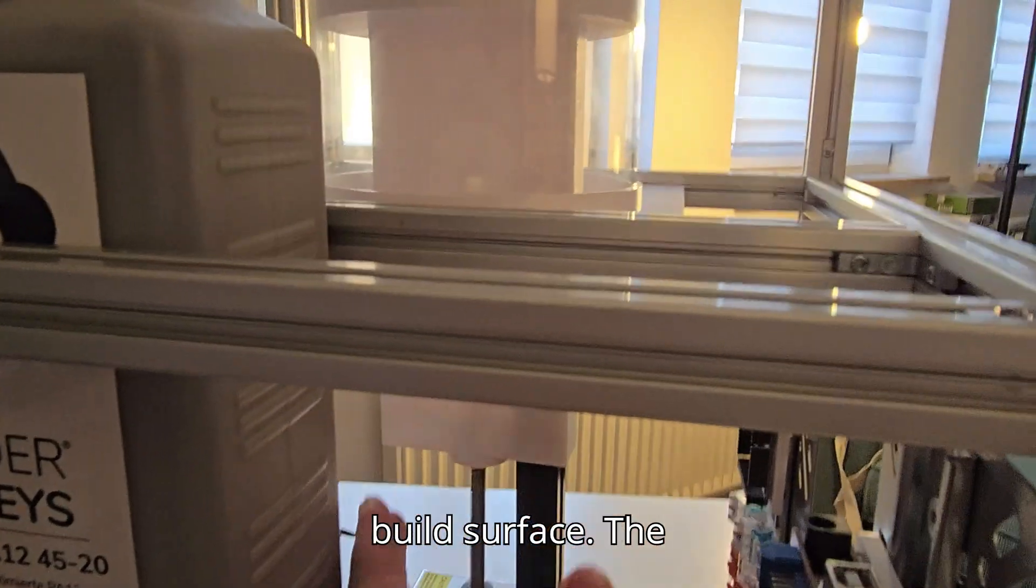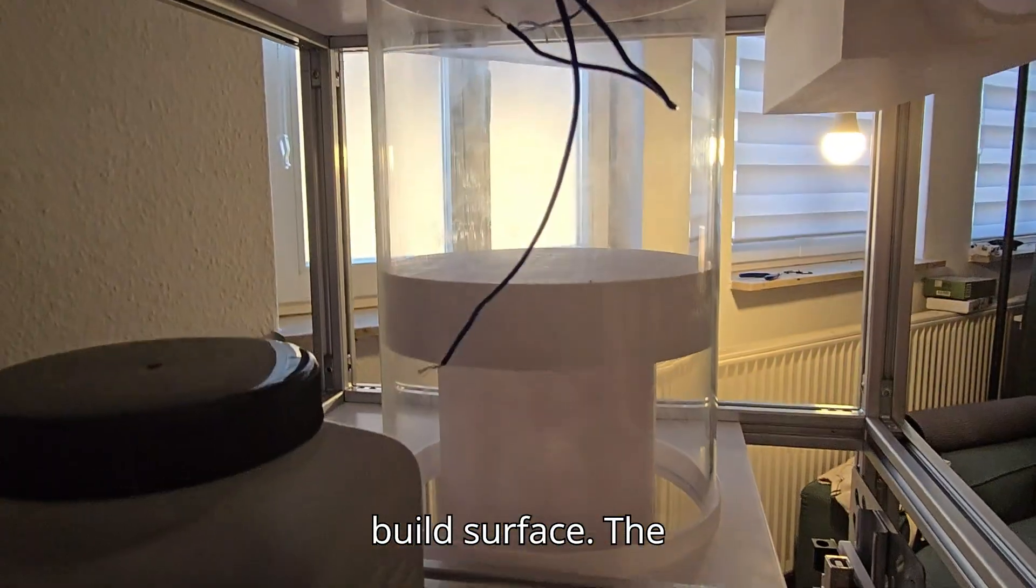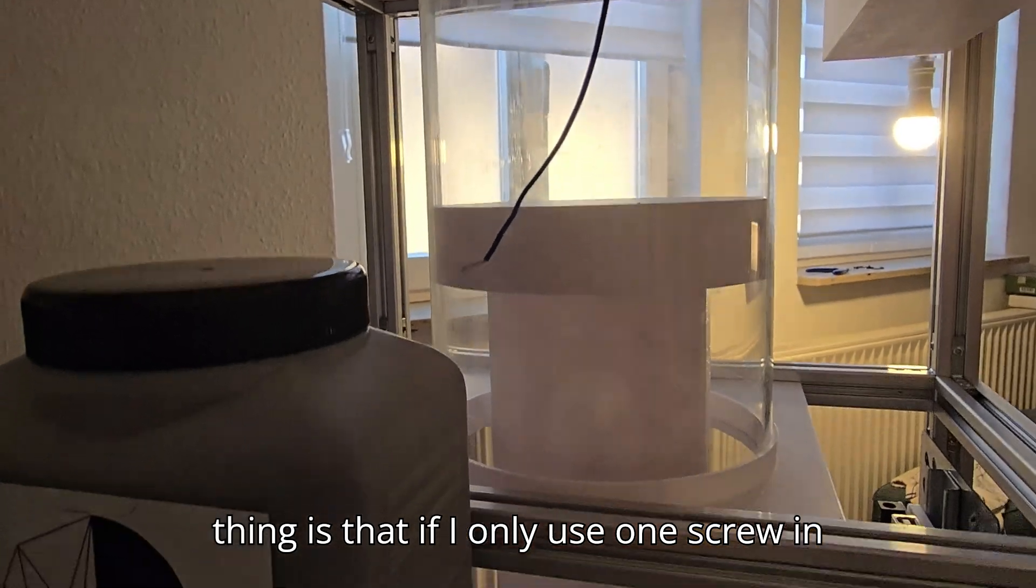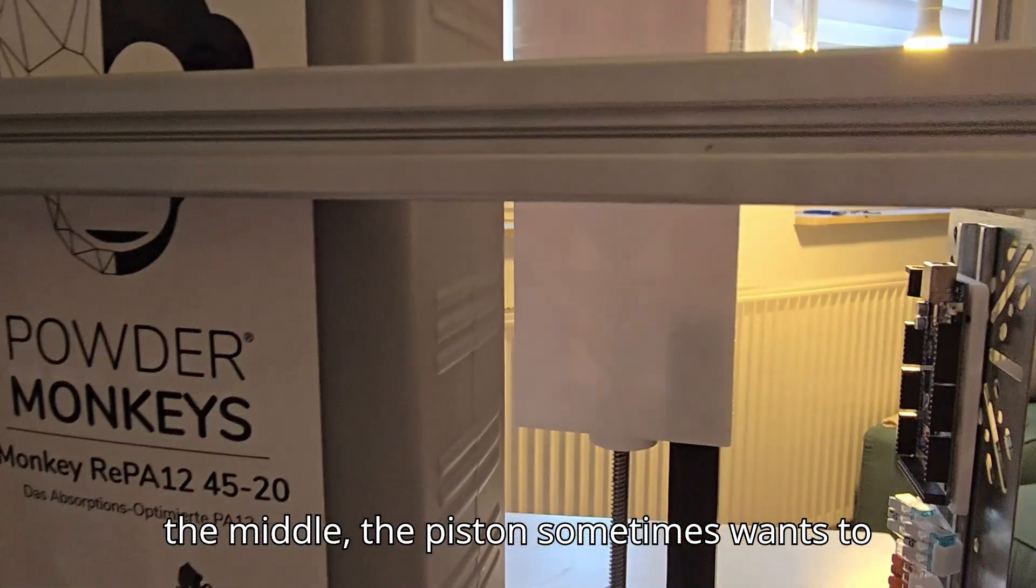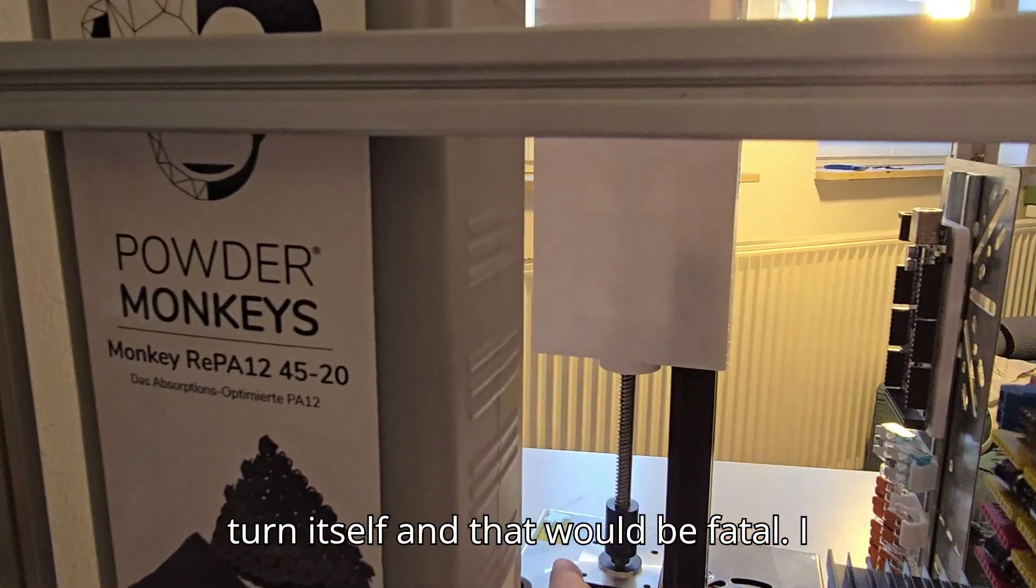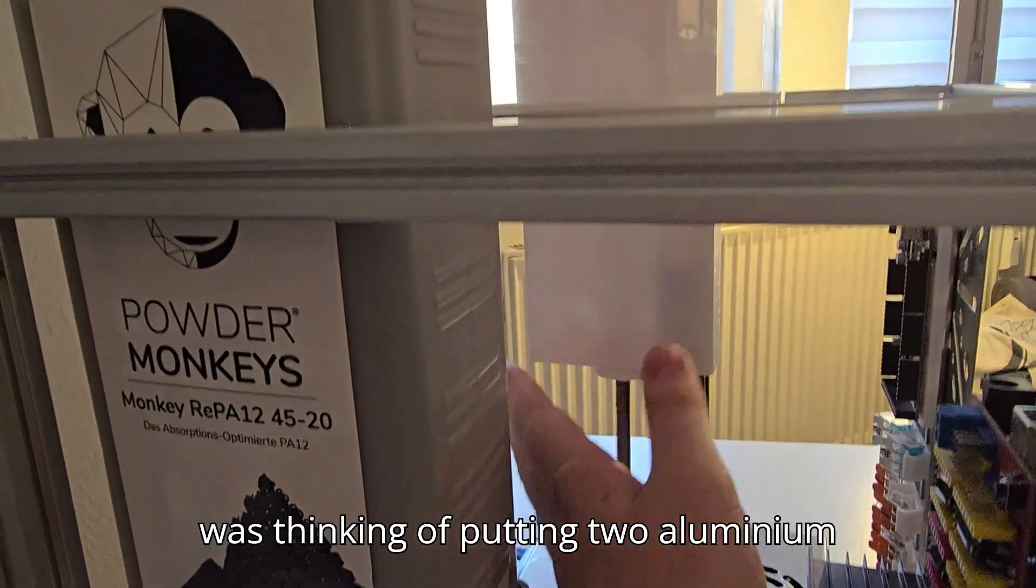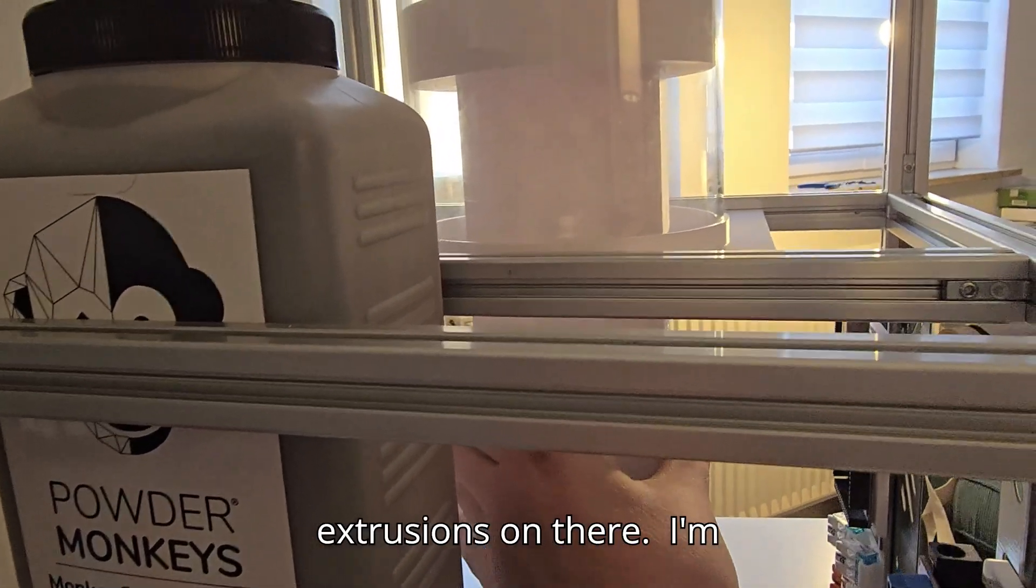This is the piston for the build surface. The thing is that if I only use one screw in the middle, the piston sometimes wants to turn itself and that would be fatal. I was thinking of putting two aluminum extrusions on the surface.